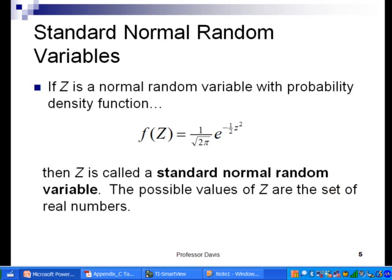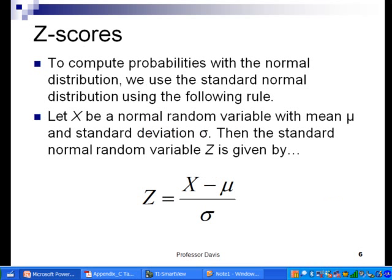Let's talk about how we get these z-scores so we can compute probabilities. If we let x be a normal random variable with a mean mu and a standard deviation sigma, then the standard normal random variable z is given by this formula: we take whatever x value we have, subtract away the mean, and then divide that difference by the standard deviation.